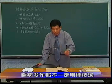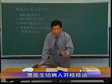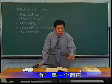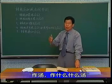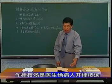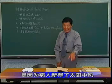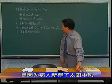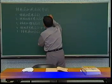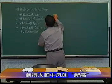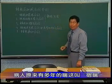喘家加，作桂枝汤，是什么意思呢？是医生给病人开桂枝汤。作是个谓语，这里把主语给省略了，在伤寒论中经常说作汤、作什么什么汤。为什么要给病人开桂枝汤啊，是因为病人新得了太阳中风。病人原来有多年的喘，这叫素喘。新得太阳中风叫新感。